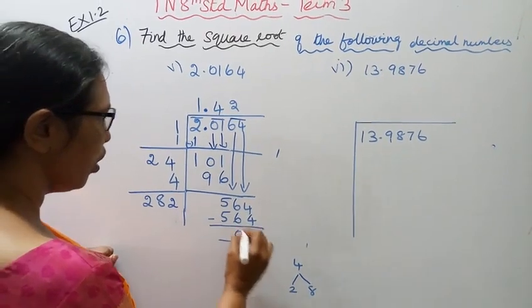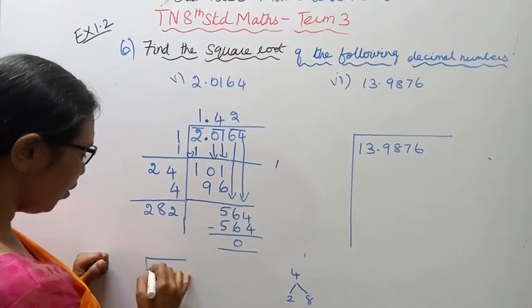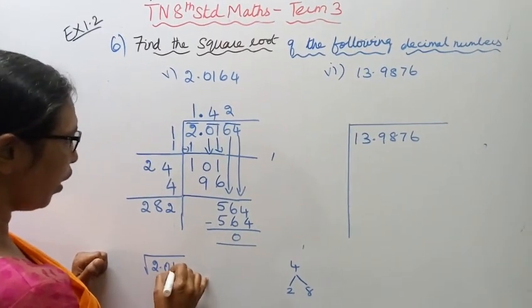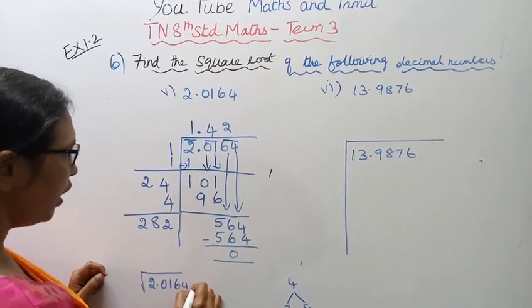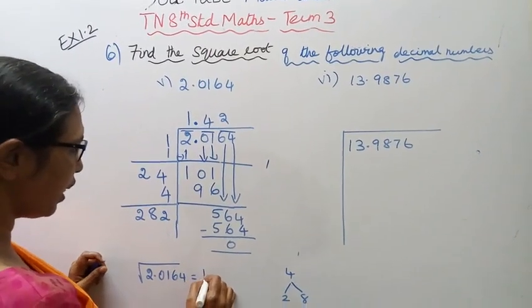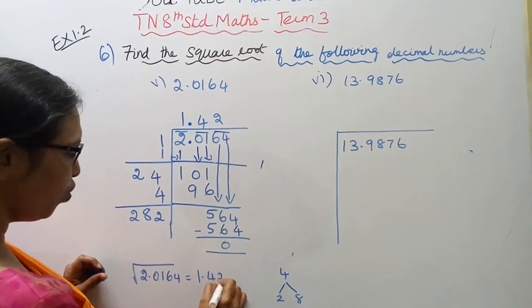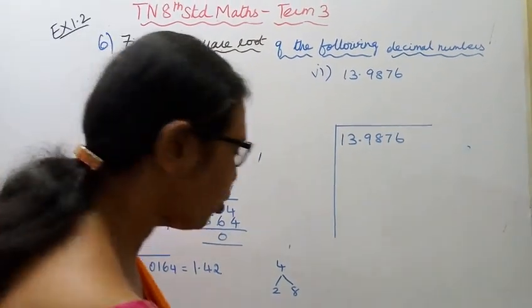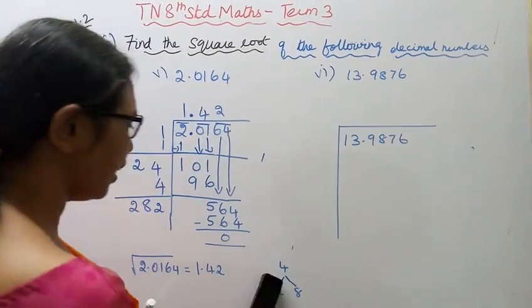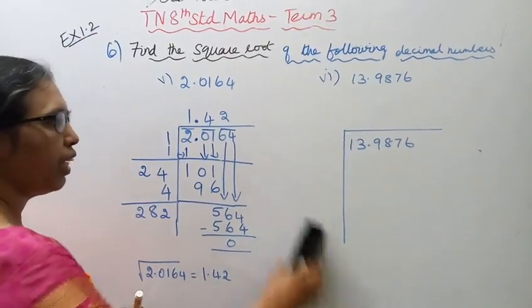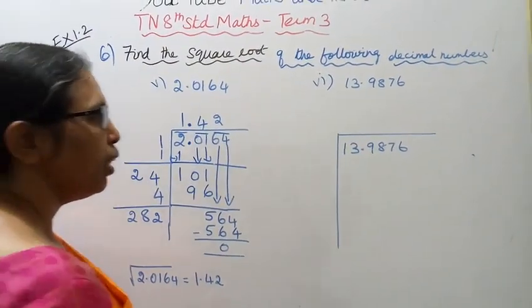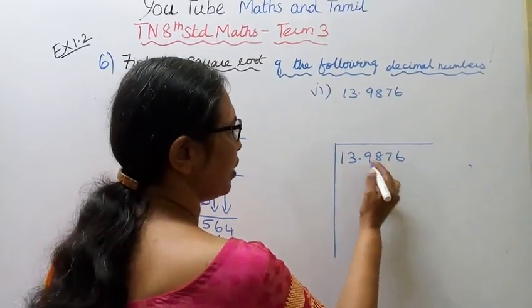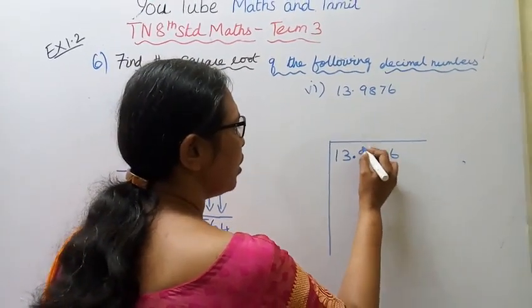The square root of 2.0164 is 1.42. So the answer is 1.42. Now the next problem is 13.9876.